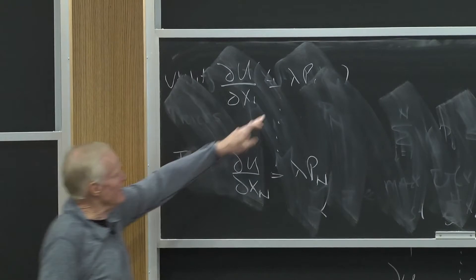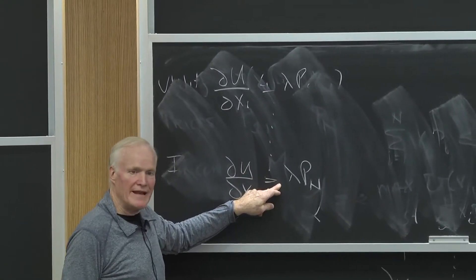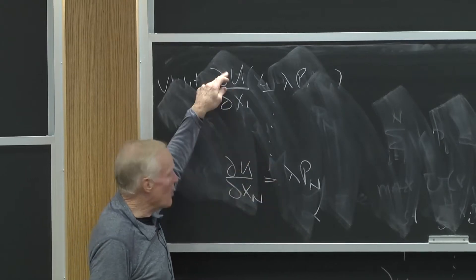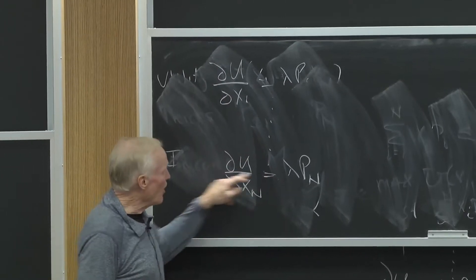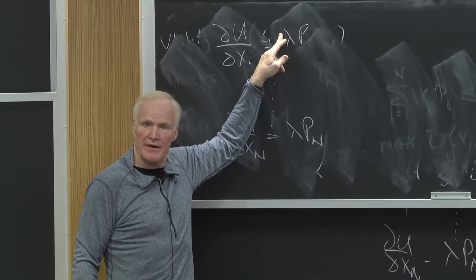And remember, lambda is the same in every equation. So it tells me that in equilibrium, marginal utilities are proportional to prices, and lambda is that factor of proportionality.